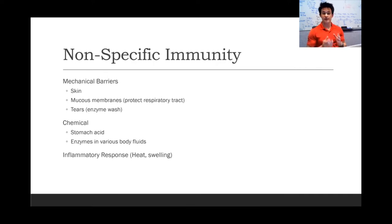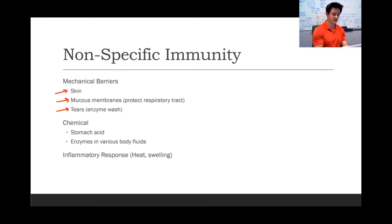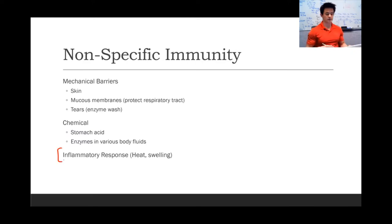The first line of defense the body has against pathogens is called nonspecific immunity — immunity not specific to any particular pathogen. This comes in a few forms: mechanical barriers such as the skin, mucous membranes, and tears, as well as chemical protections such as stomach acid and enzymes in bodily fluids. Within nonspecific immunity is also the inflammatory response, such as heat and swelling.